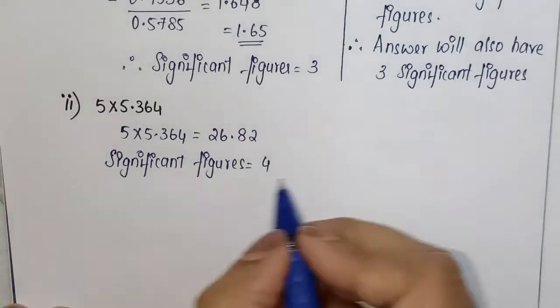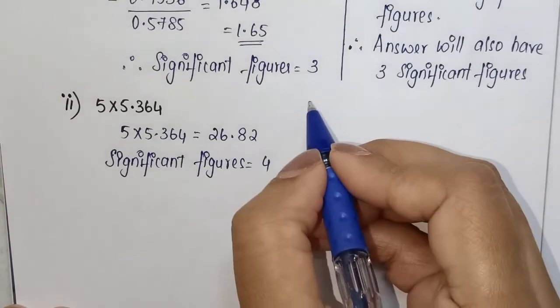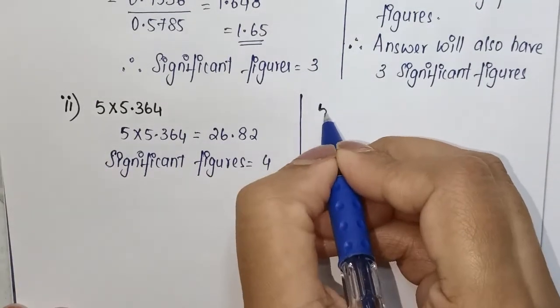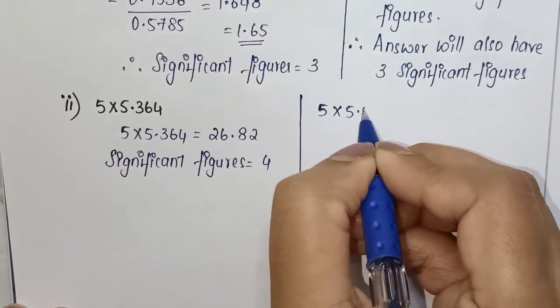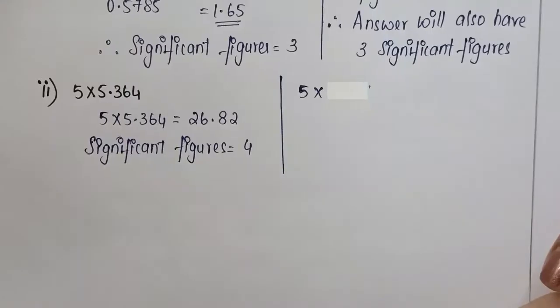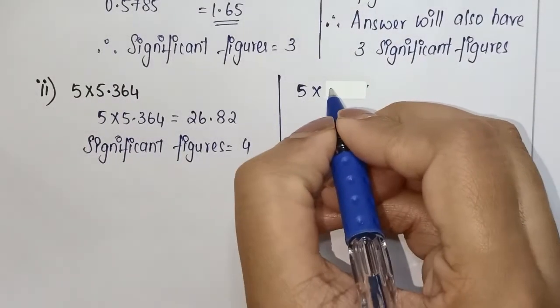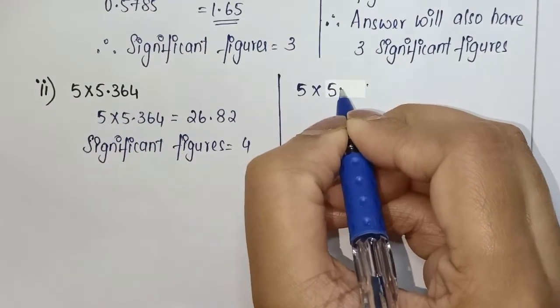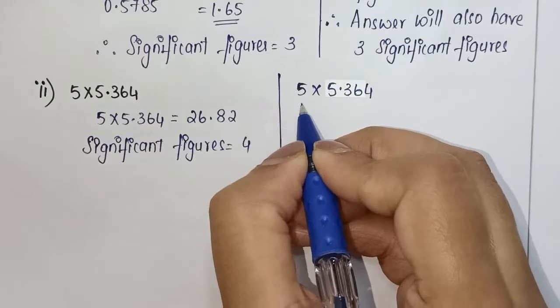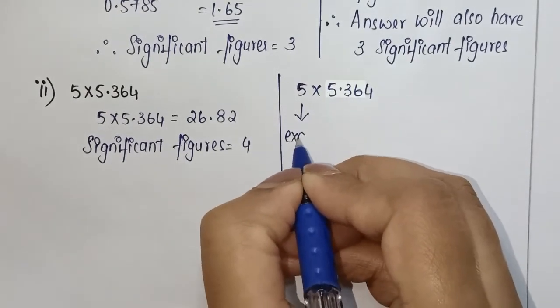But if you're trying to get the answer without calculation, just by looking at the numbers, when we write down the question 5 × 5.364, the 5 is an exact number.